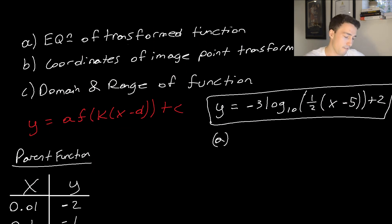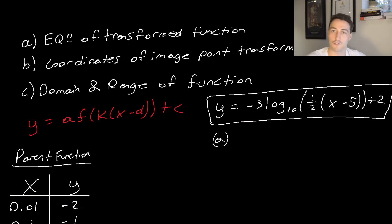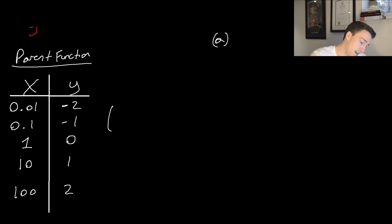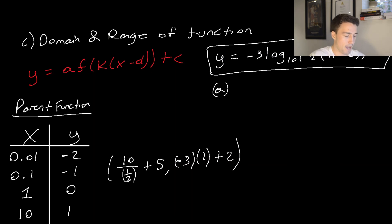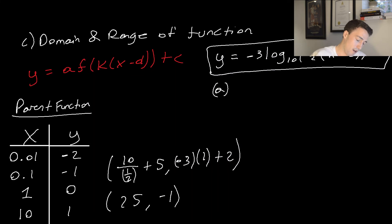Part B asks for the coordinates of the image point transformed from (10, 1). We apply the mapping rule: x becomes 10 divided by k (which is 1/2, or 0.5), plus d (which is 5). So 10/0.5 + 5 = 20 + 5 = 25. The y coordinate is a times y plus c: −3 × 1 + 2 = −1. So the transformed image point is (25, −1).